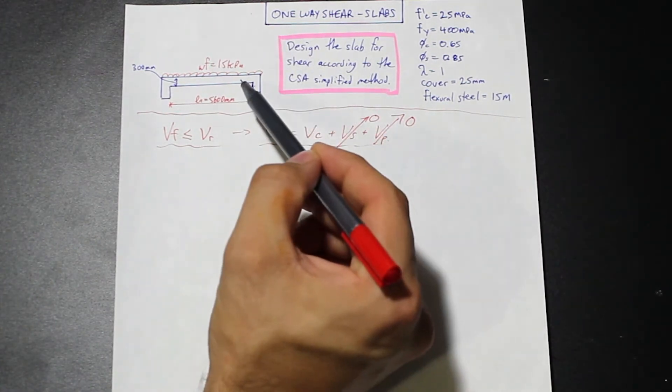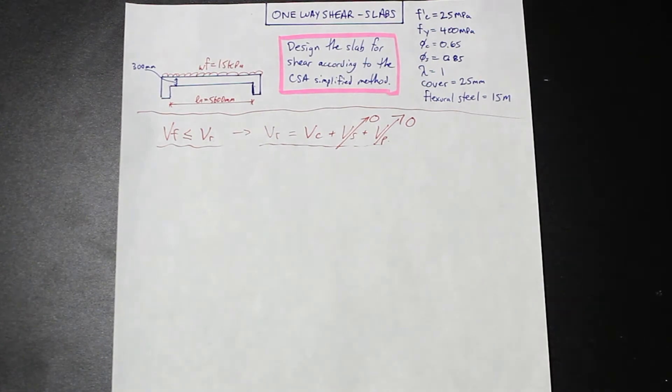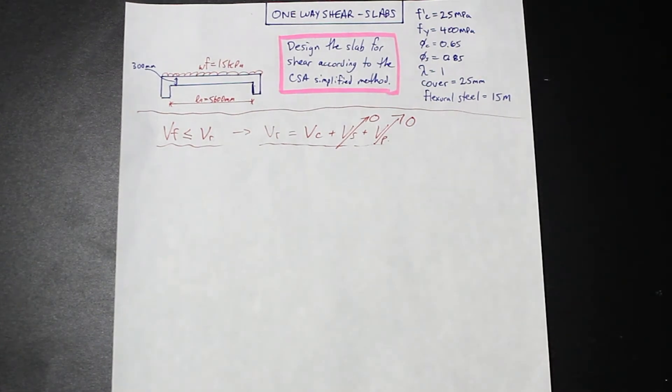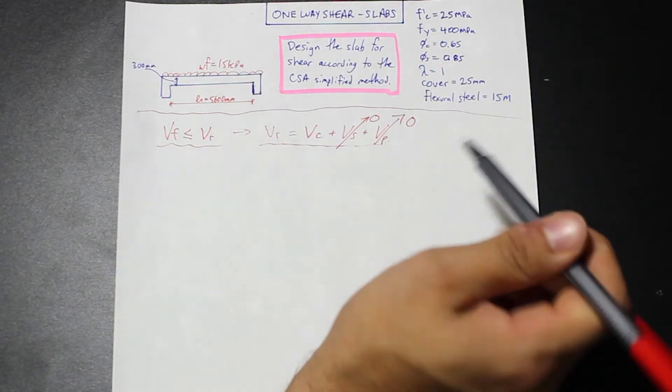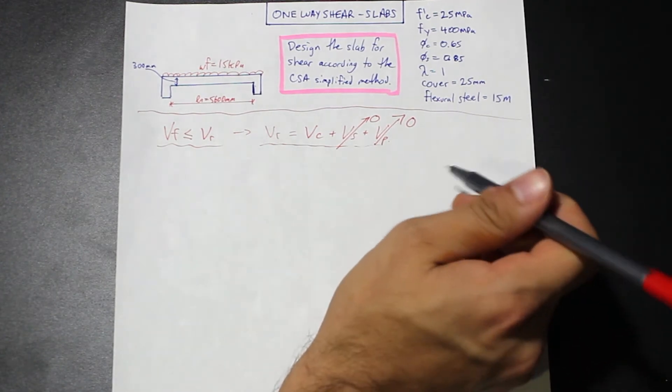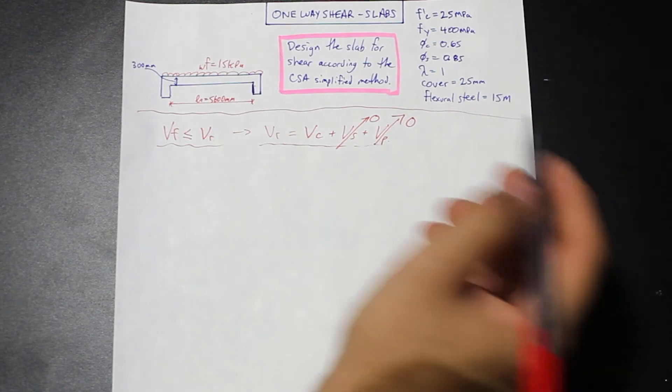The reason is that if we have a slab, typically in a high-rise residential building, we're not going to add shear reinforcement if we have a shear problem. What we're going to do is we're going to thicken the slab all the way across the floor, or we're going to add capitals or drops. Adding shear reinforcement across an entire slab would be far too expensive and would probably get you fired as a structural consultant. Now, let's take a look at what VC is.